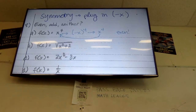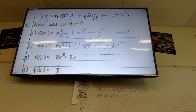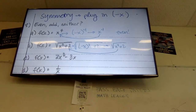For the next one, I've got the square root of negative x squared plus 2. Negative x squared is just x squared, so I get the square root of x squared plus 2. I can't simplify it anymore. Is that the same or the absolute opposite of what we had? It's the same — so that makes it even.